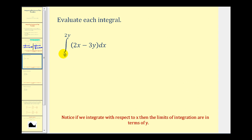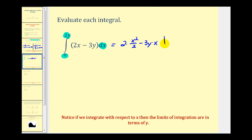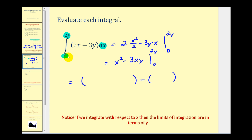Let's take a look at another example. Here we have a definite integral of a function of two variables. Notice that we're integrating with respect to x, but the limits of integration are in terms of y. Because we're integrating with respect to x, we'll treat y as a constant. So here we're going to have 2 times x squared over 2, and treating y as a constant, minus 3y times x, with our limits of integration. Simplifying, we get x squared minus 3xy.